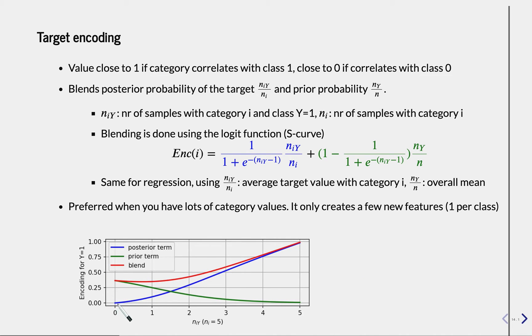And this means that if we have no or very few cases where we have our category i, we fall back to the prior. We have no information other than just looking at the ratio of positive samples.